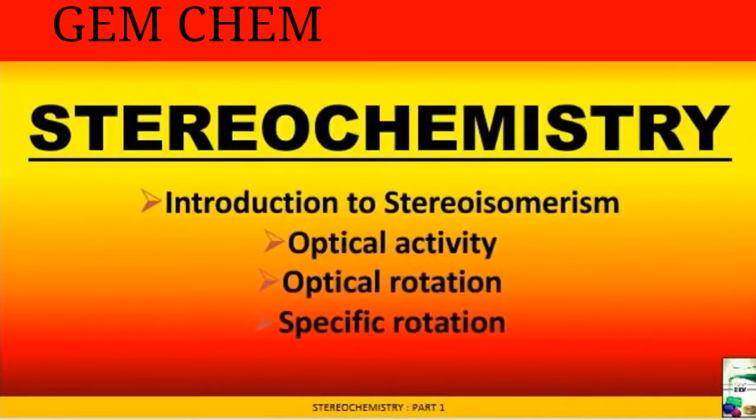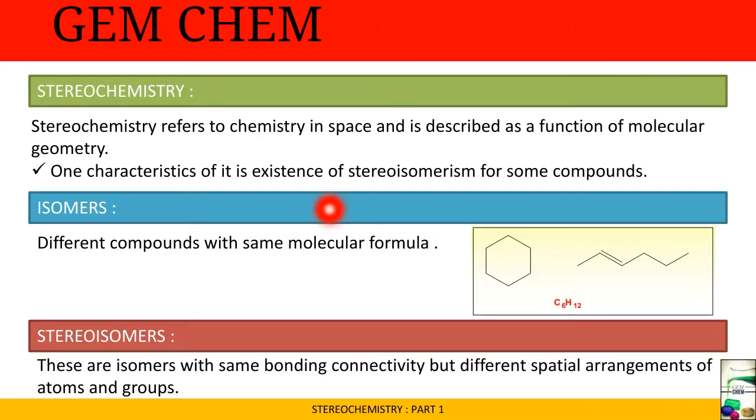Here we'll deal with basic introduction to stereoisomerism, optical activity, optical rotation, and specific rotation. Stereochemistry refers to chemistry in space and is described as a function of molecular geometry. It's the part of chemistry which studies structure in three dimensions. One characteristic is the existence of stereoisomerism for some compounds.